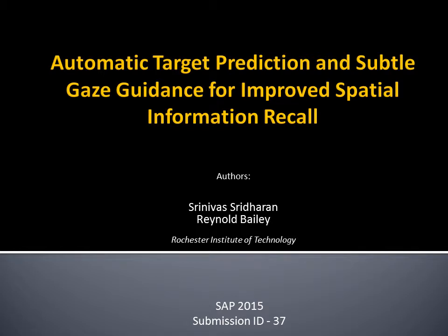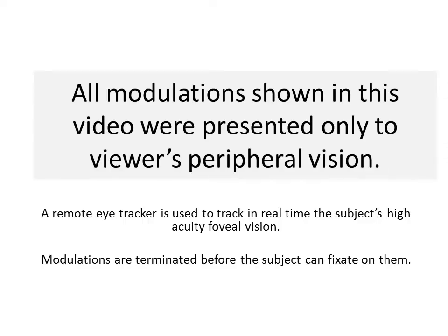Automatic target prediction and subtle gaze guidance for improved spatial information recall. Modulations shown in this video were presented only to the viewer's peripheral vision. We use a fast eye tracker in real time to know where the subject's high acuity foveal vision is, and terminate the modulation before the subject can fixate on them.